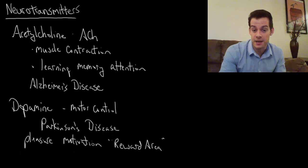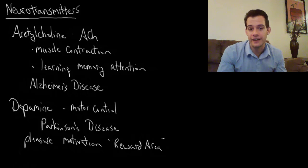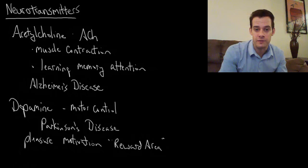We'll talk about the nucleus accumbens in more detail in a future video. We'll also talk about dopamine when we talk about schizophrenia, because one of the theories of schizophrenia is that some symptoms are associated with elevated levels of dopamine in certain areas of the brain.